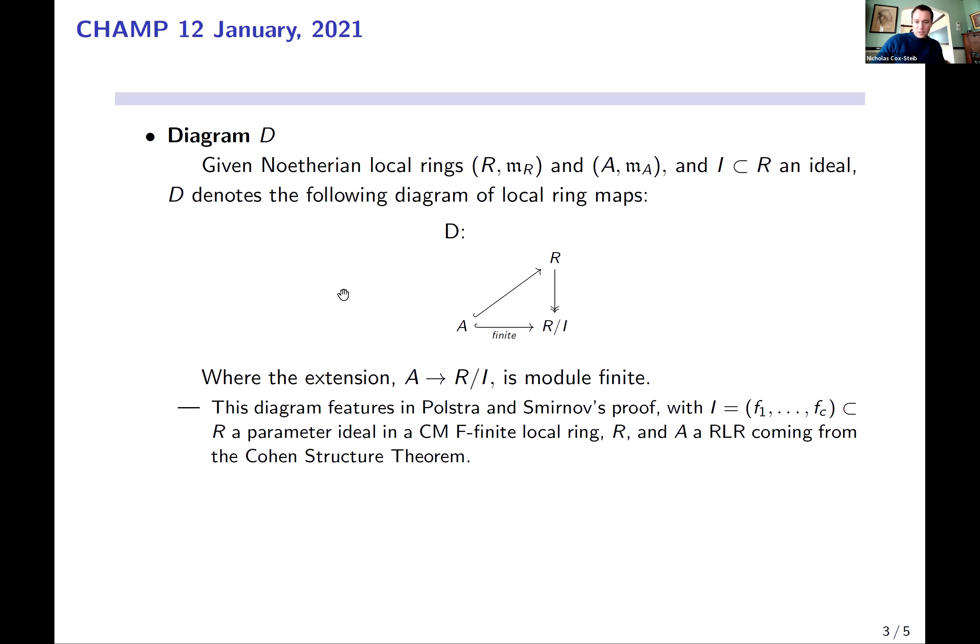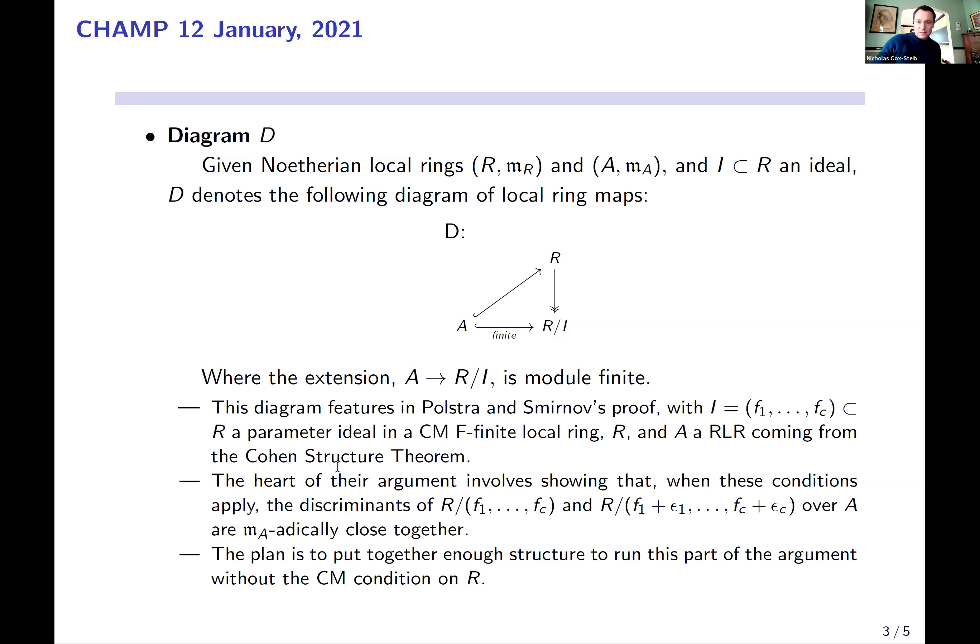So they use this construction in the proof. And their argument is really about controlling discriminants of these quotients. And when you perturb the generators by sufficiently small elements, m-adically small elements, you get discriminants that are m-adically small in A. And that's sort of the linchpin of the argument. So the plan is to put as much structure as we need in place to run this outside of the Cohen-Macaulay case. Which is subtle. I'll talk about that quite a bit.